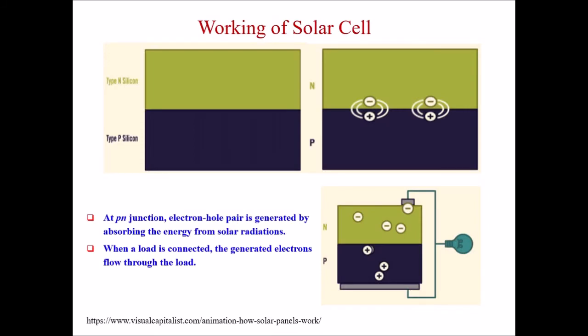What happens is that light falls on the P-N junction, generating electron-hole pairs. These holes and electrons then move across the boundaries through diffusion and drift.